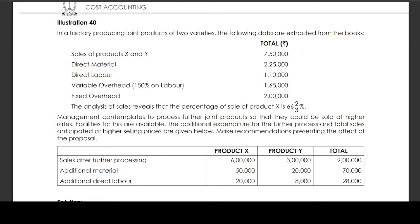Additional material for product X — 50,000; product Y — 20,000; total — 70,000. Additional direct labour for product X — 20,000; product Y — 8,000; total — 28,000.